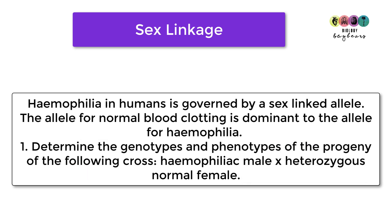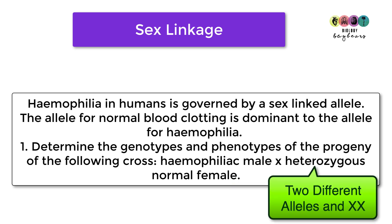So question one says, determine the genotypes, so the genetic makeup, the alleles, and the phenotypes, the physical makeup, what they physically look like, of the progeny of the children of the following cross. So we're going to have a hemophiliac male, XY, and a heterozygous normal female. So a female XX, and she's heterozygous, so she has two different alleles, the normal and the hemophilia.